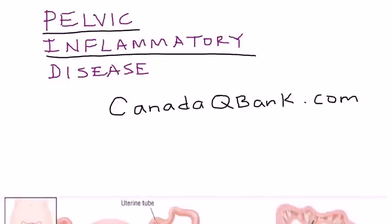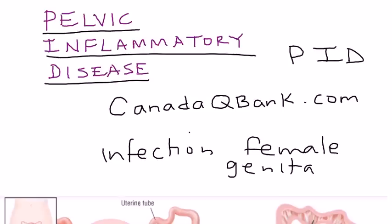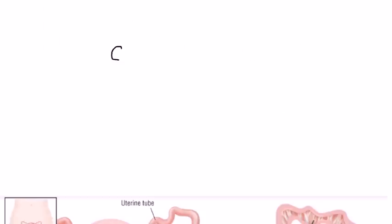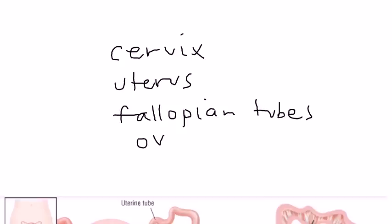Pelvic Inflammatory Disease, also known as PID, is the topic for this video. Pelvic Inflammatory Disease is basically an infection of the female genital tract. It can affect a large number of parts of that genital tract, including the cervix, uterus, fallopian tubes, and also the ovaries.